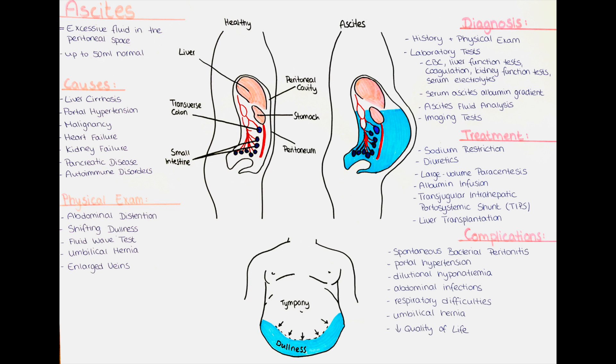The normal volume of peritoneal fluid in healthy people is generally less than 50 milliliters. The peritoneal fluid serves various functions such as lubricating the abdominal organs and facilitating their movement, providing a protective barrier against infections, and aiding in the transportation of certain substances within the abdominal cavity.